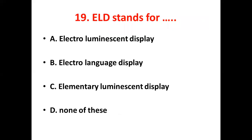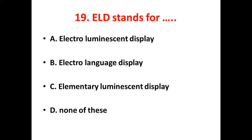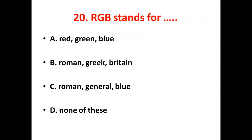19th bit: ELD stands for dash. Option A: Electro-Luminescence Display. Option B: Electro-Language Display. Option C: Elementary Illumination Display. Option D: None of this. 20th bit: RGB stands for dash. Option A: Red, Green, Blue. Option C: Roman, General, Blue. Option D: None of this. Answer — Option A: Red, Green, Blue.